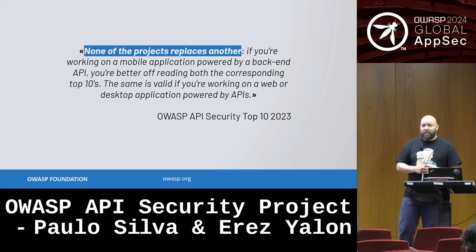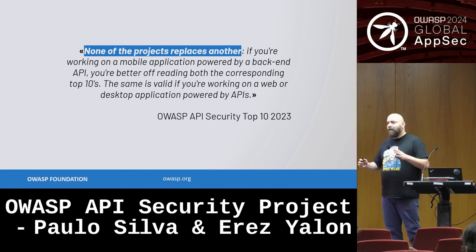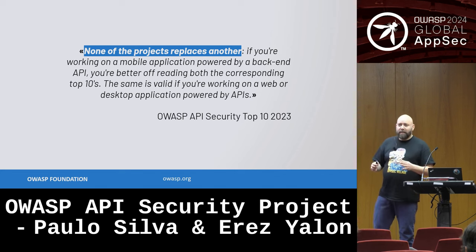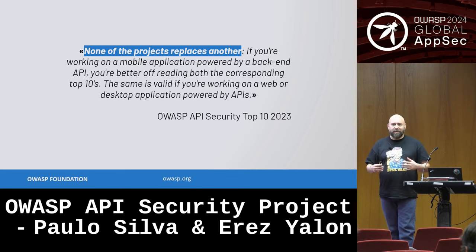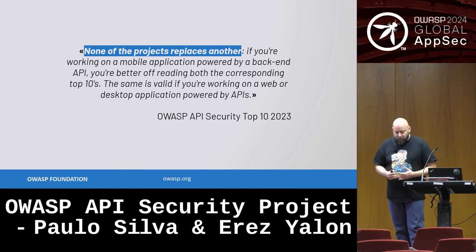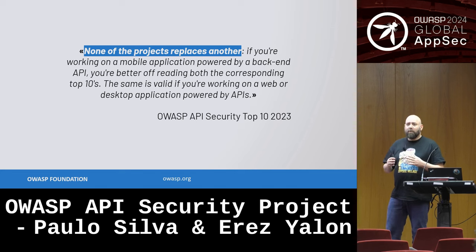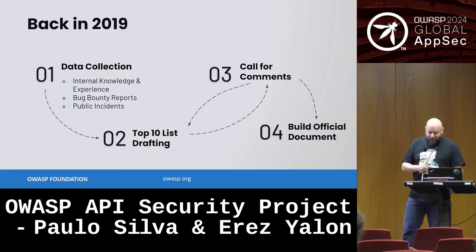None of these projects replaces another. If your application has APIs, you don't just go to the API Top 10, check it off, and consider yourself safe. Your application also has serverless components and everything is still grounded in the traditional application Top 10. These are not mutually exclusive. Although there is some overlap, unfortunately we need everything. With this in mind, we started to work.